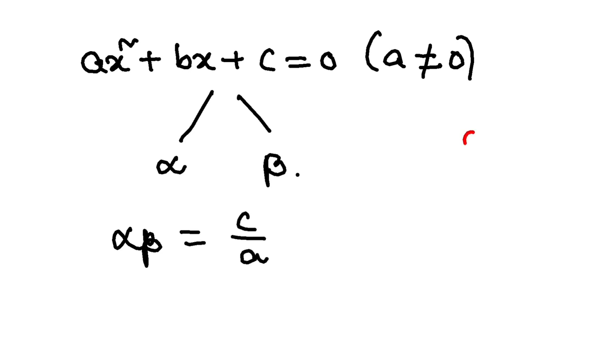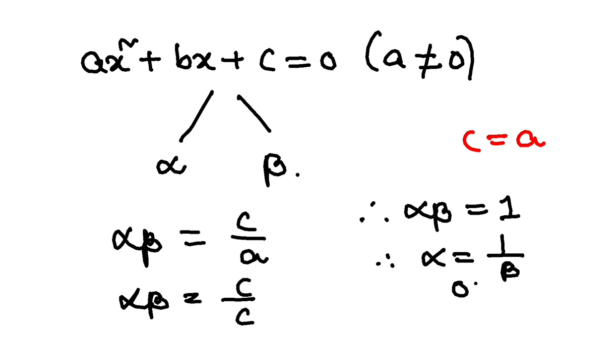If we assume that c is equal to a, then this condition alpha beta will be c by c or a by a. That means, ultimately you will have alpha beta is equal to 1. That will give you alpha is equal to 1 by beta or you can say beta is equal to 1 by alpha. That means, the roots are reciprocal to each other.